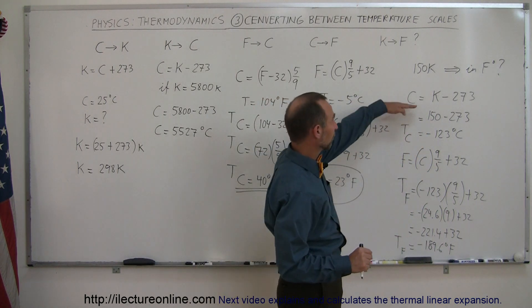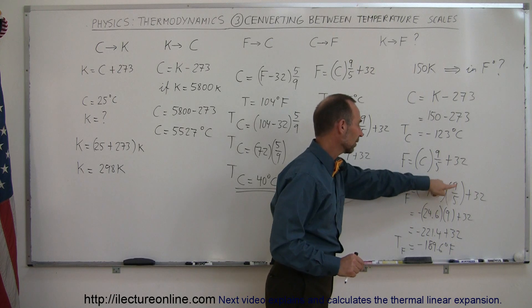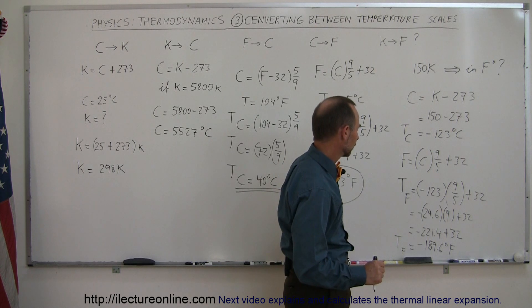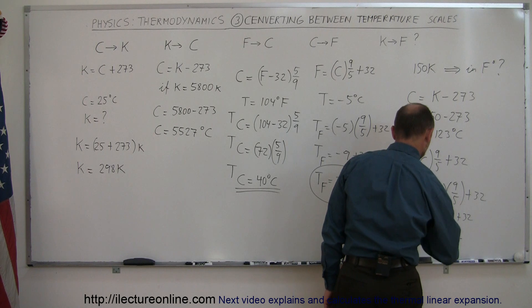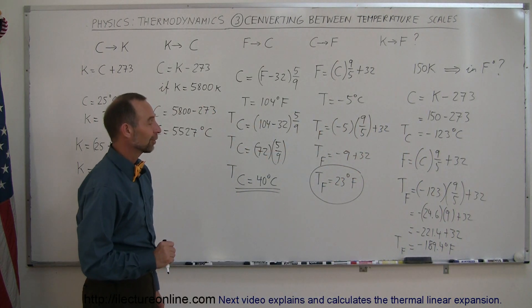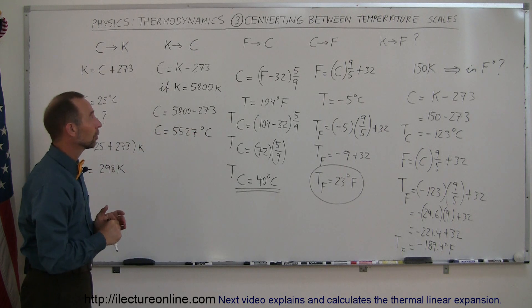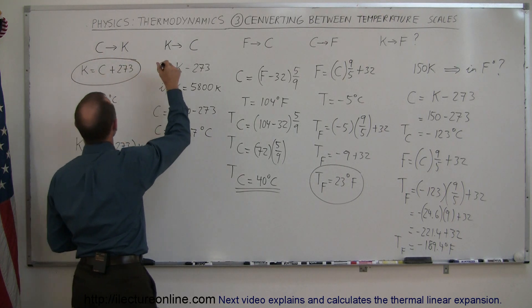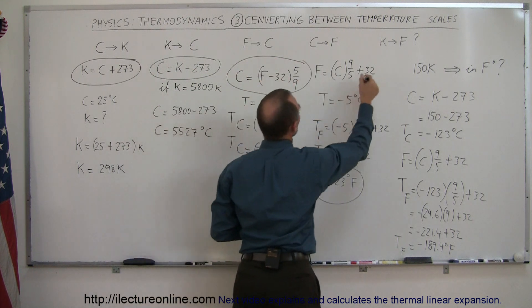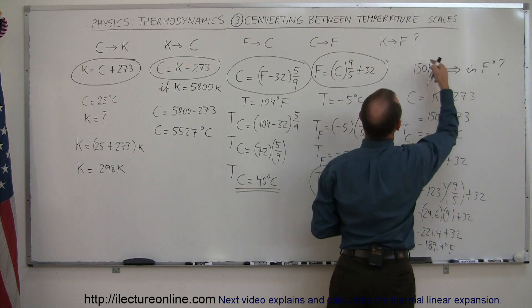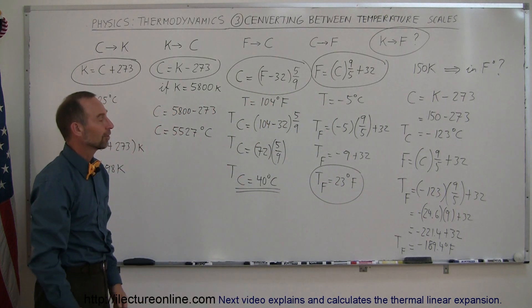So what we did was first convert from Kelvin — 150 minus 273 — to get centigrade degrees, then use the equation with minus 123 times 9 over 5 plus 32 to get Fahrenheit degrees. That's how you convert to Fahrenheit degrees. I hope this helps. Now you can see how you can convert from one temperature scale to another using these equations: centigrade to Kelvin, Kelvin to centigrade, Fahrenheit to centigrade, centigrade to Fahrenheit, and if you need to convert from Kelvin to Fahrenheit, just do it in two steps — first go to centigrade, then go to Fahrenheit.